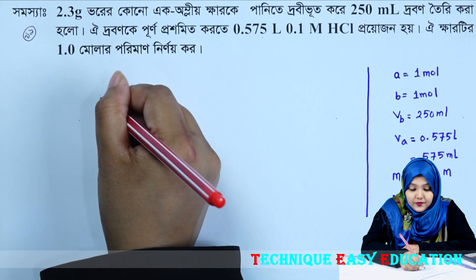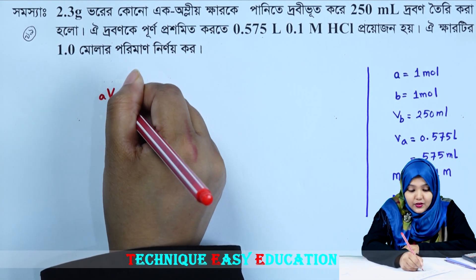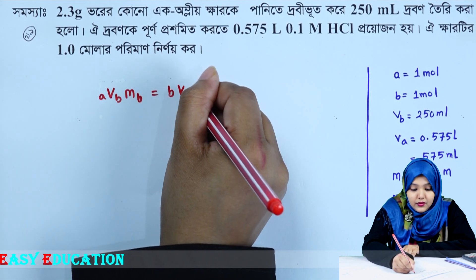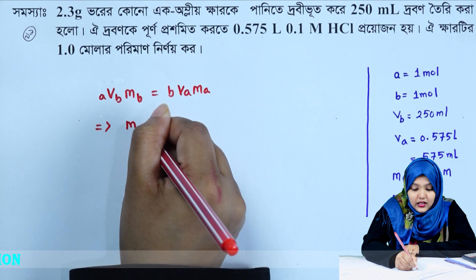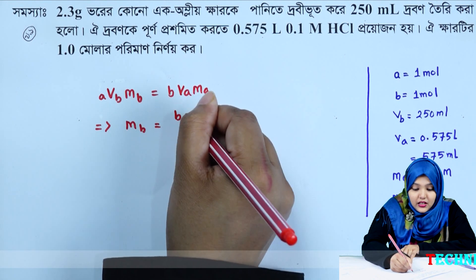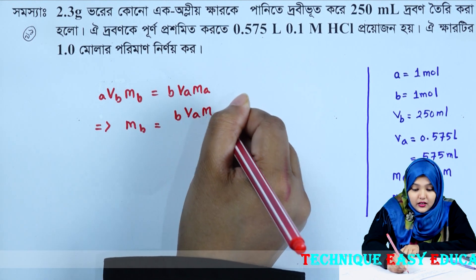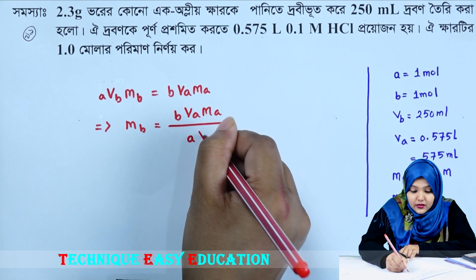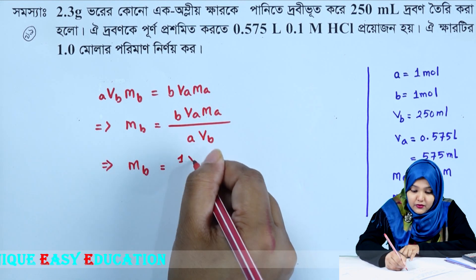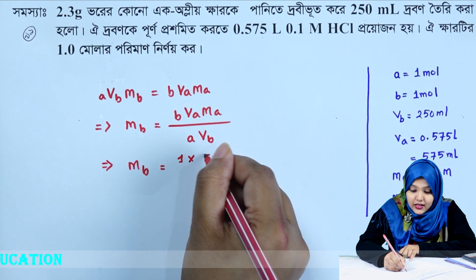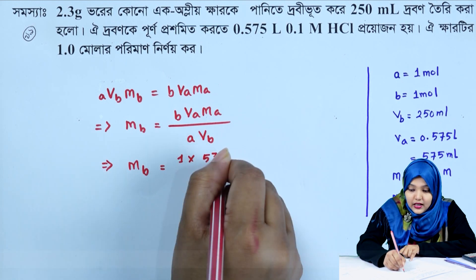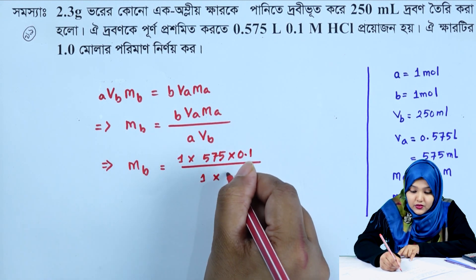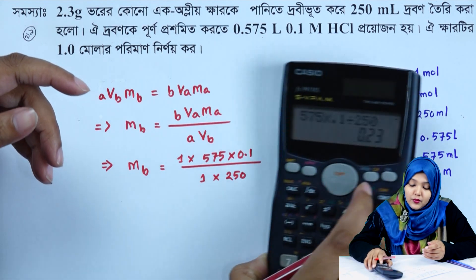We will convert VB. MB is equal to B. The formula is MB = (VA × MA) / (VB × a). VA means 575, MA means 0.1, a means 1, VB means 250.